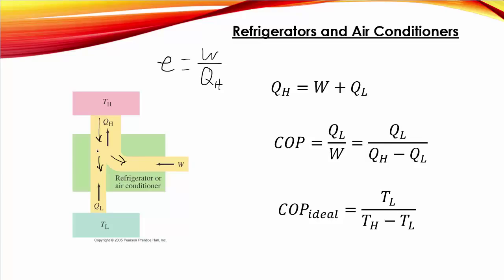Well, the benefit is a little bit different for a refrigerator or an air conditioner. The benefit is how much heat you get rid of in the cold region. So our benefit, which always goes on top, is QL now. And the cost is how much energy we have to use by plugging in our refrigerator or air conditioner. So there is benefit over cost.